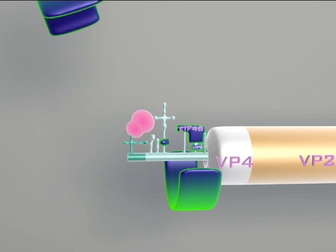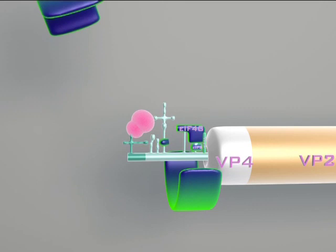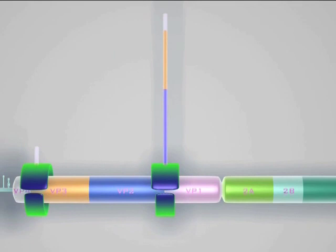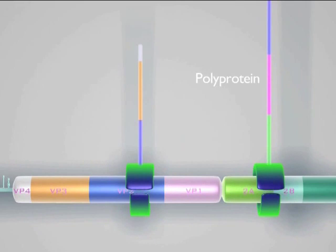As soon as the complete ribosome reaches the initiation codon, translation can begin. Each ribosome translates the open reading frame of the genome in one long pass, producing a polyprotein.